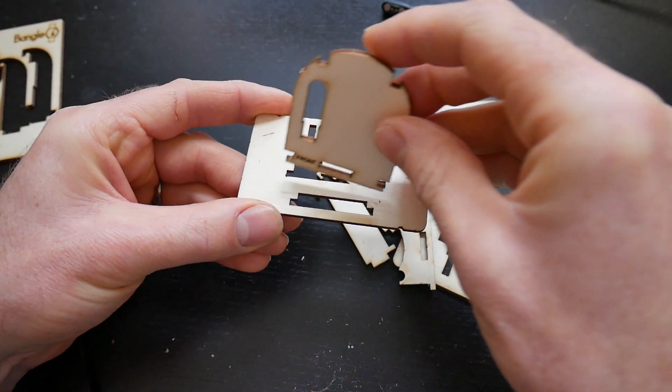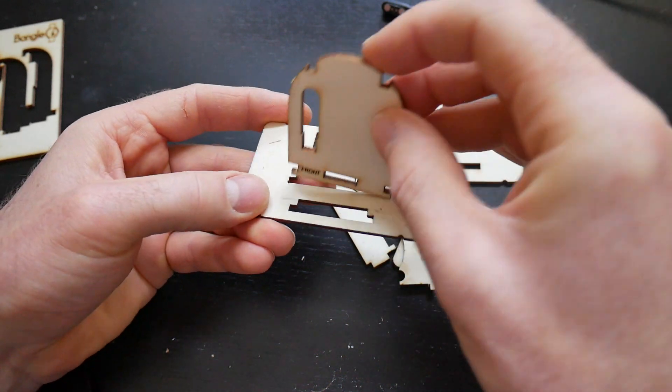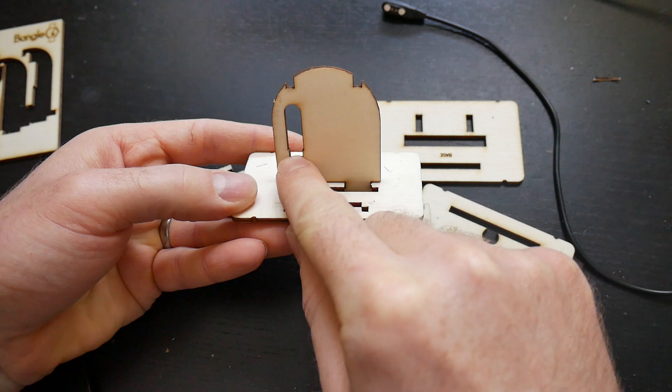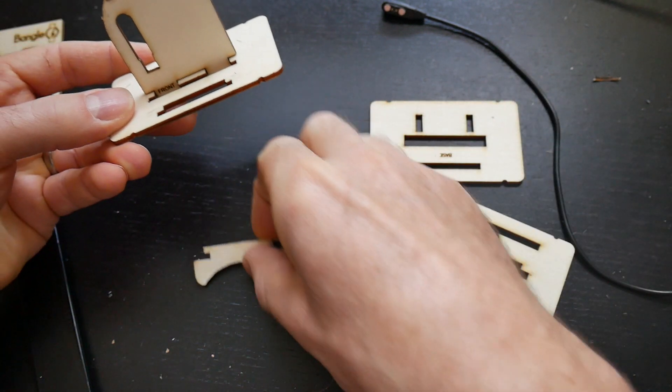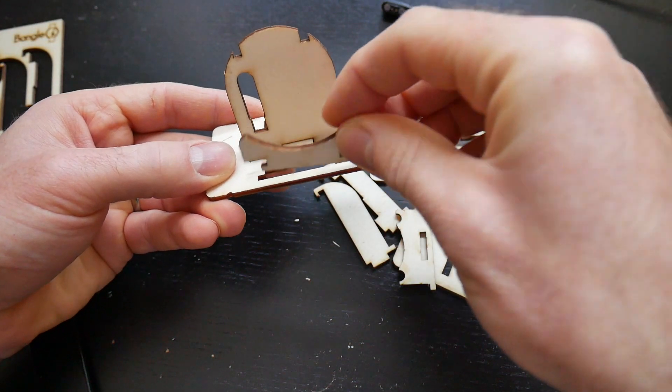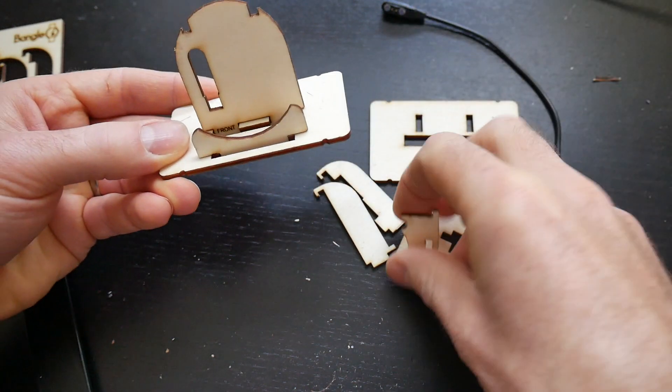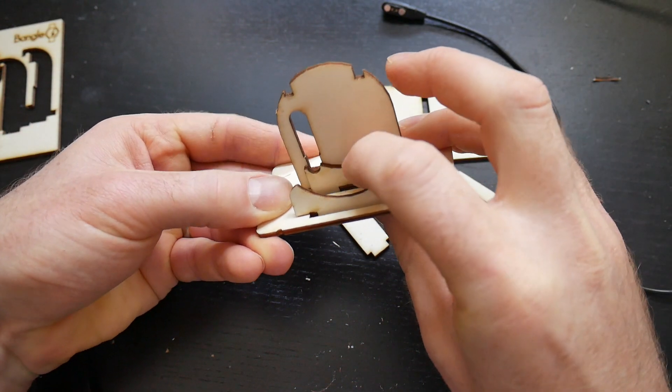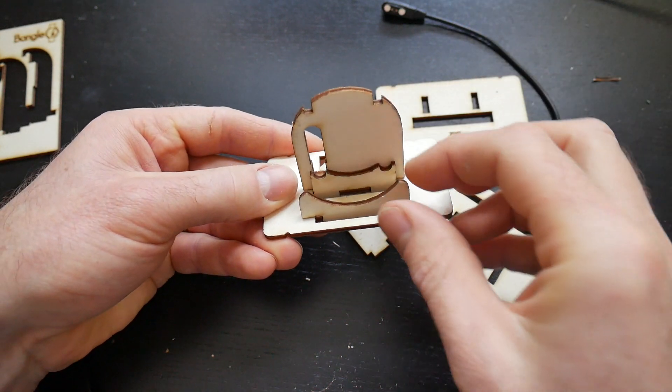We take this main plate here and slot that in here. And this layer slots in just in front of the main panel there.